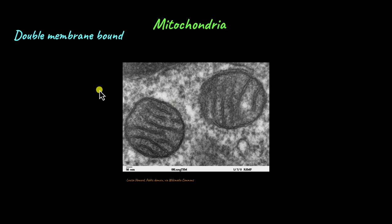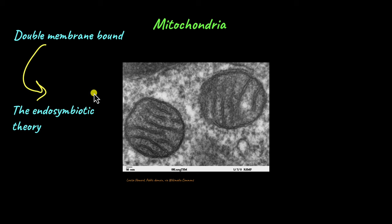For a long time scientists were wondering how come mitochondria and chloroplasts have two membranes while other organelles like lysosomes or endoplasmic reticulum have just one. Well, one theory that tries to explain the presence of an additional membrane in these organelles is known as the endosymbiotic theory. According to this theory, there was an ancestral eukaryote that didn't have mitochondria or chloroplasts, and then it engulfed a bacterium —